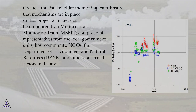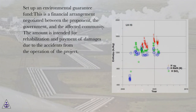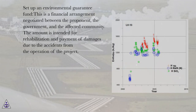The MSMT is composed of representatives from the local government units, host community, NGOs, the Department of Environment and Natural Resources (DENR), and other concerned sectors in the area. Set up an environmental guarantee fund. This is a financial arrangement negotiated between the proponent, the government, and the affected community. The amount is intended for rehabilitation and payment of damages due to accidents from the operation of the project.